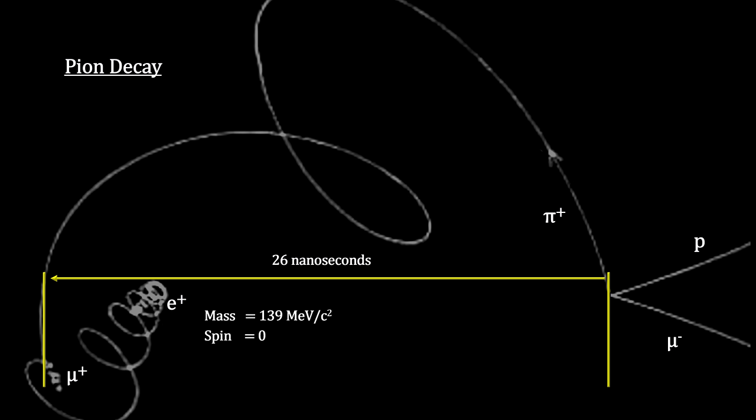Pions are spin-zero particles with around 14 hundredths of a proton's mass. Although that's small, it's a good deal more massive than the muon. Pions came in three flavors: one with a positive charge, one with a negative charge called the anti-pion, and one with no charge at all.